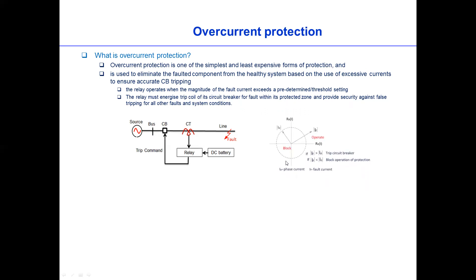And this is the tripping scenario. If the measured fault current is outside of the circle then it will operate. If not, it will remain blocked or unstable.